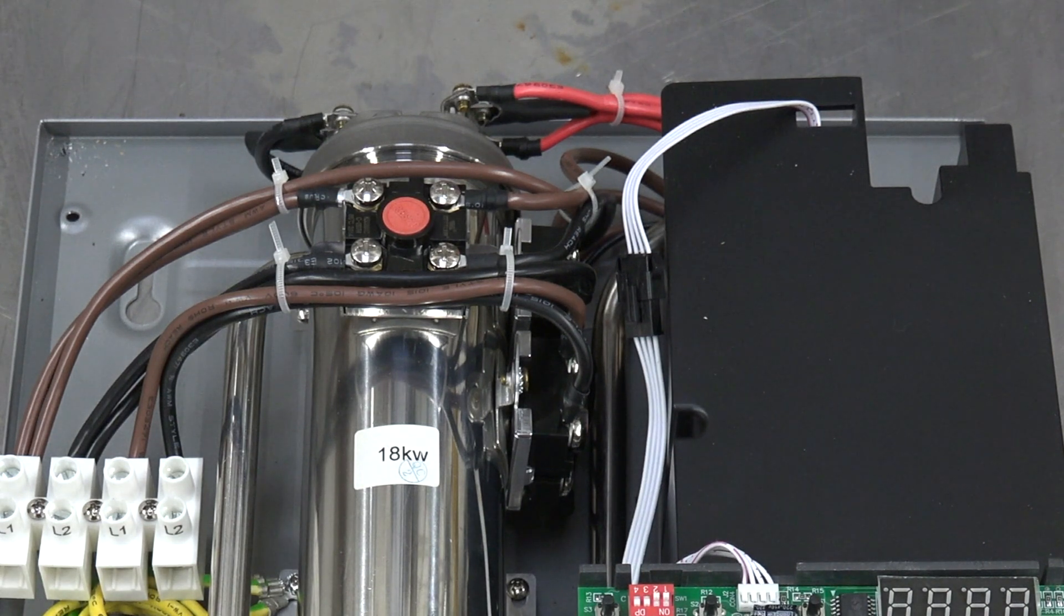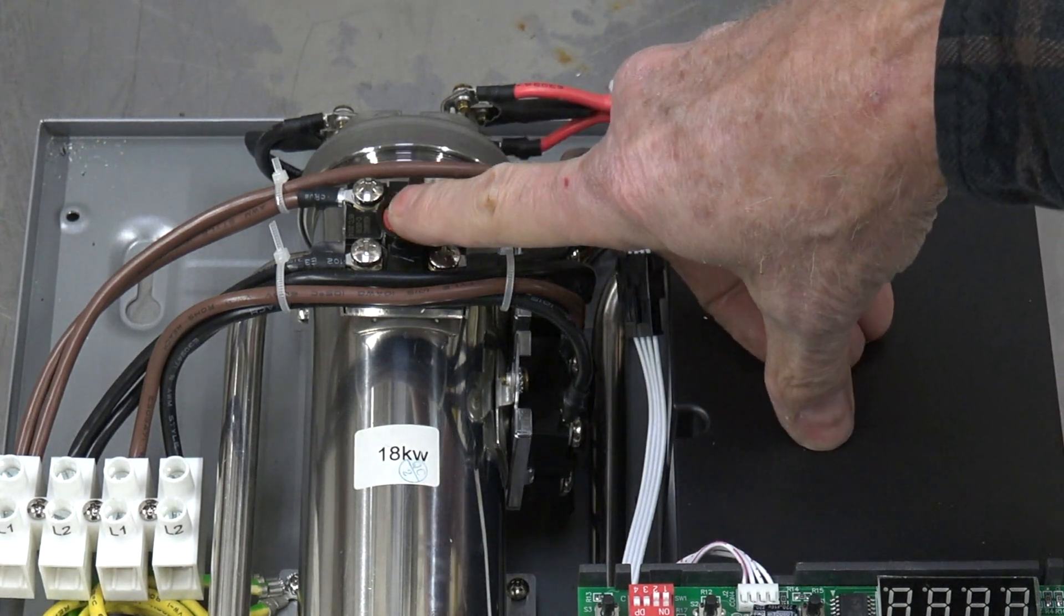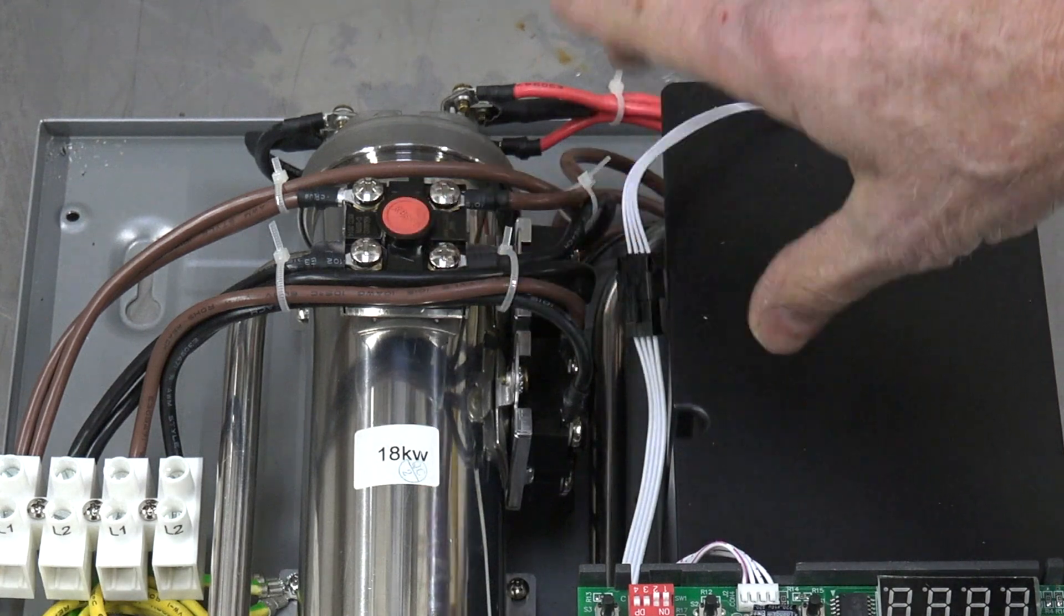What those are for is if an element burns out, that doesn't mean it stops heating. Depending on how much resistance there is in the water, and if it has actually burned through the metal casing of the element, it may continue to heat - maybe not near as much, but it will still heat. So you have these ECOs, energy cutout, in case something like that happens because it cuts all power to it.